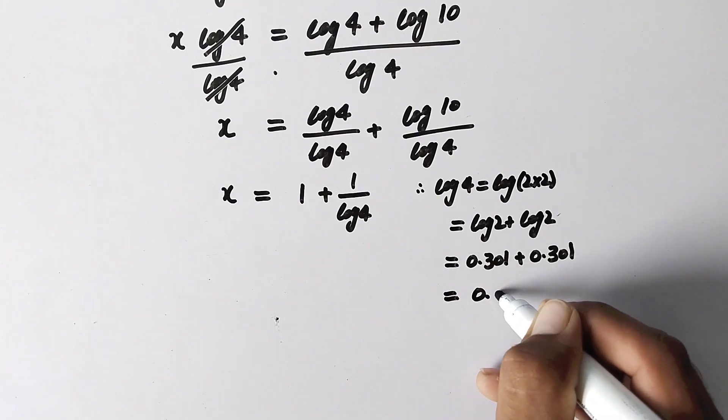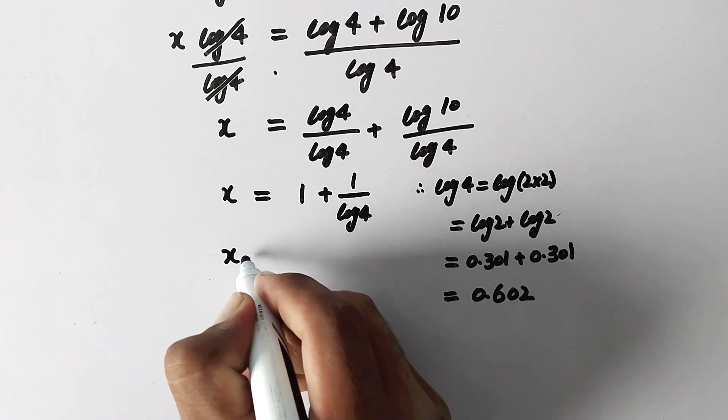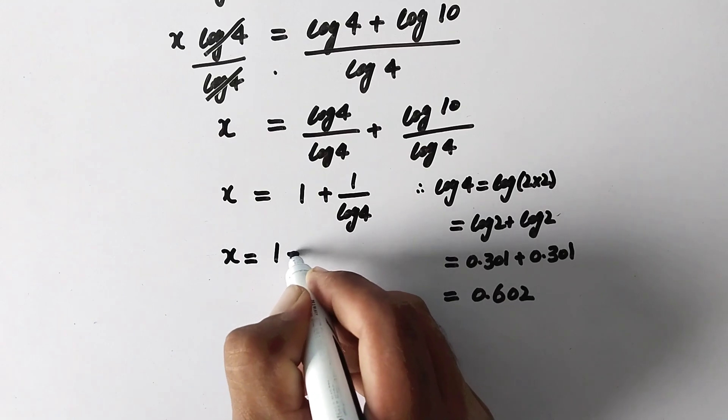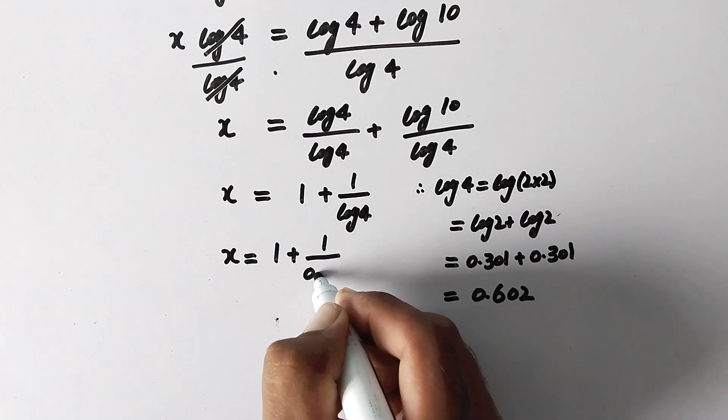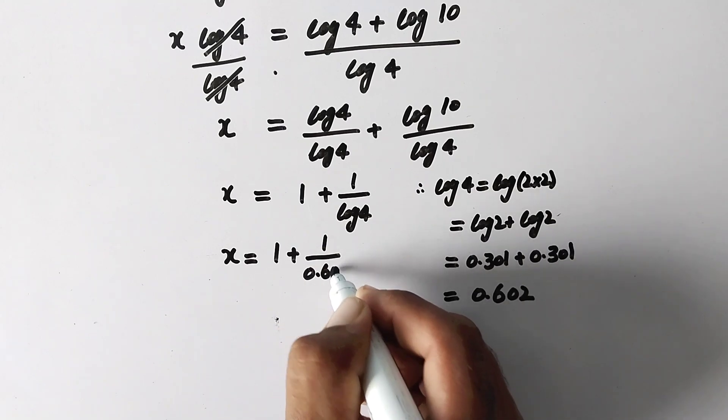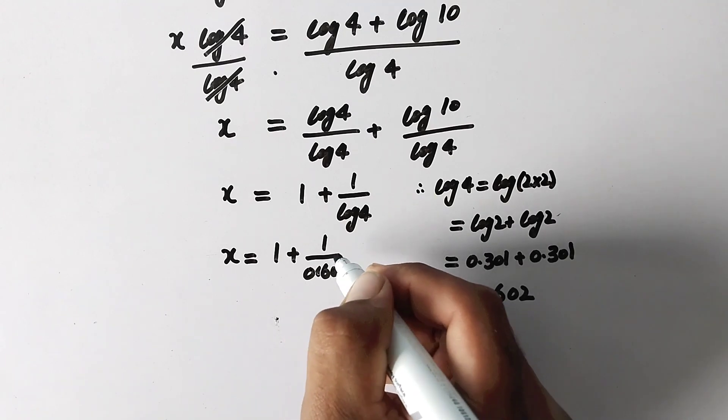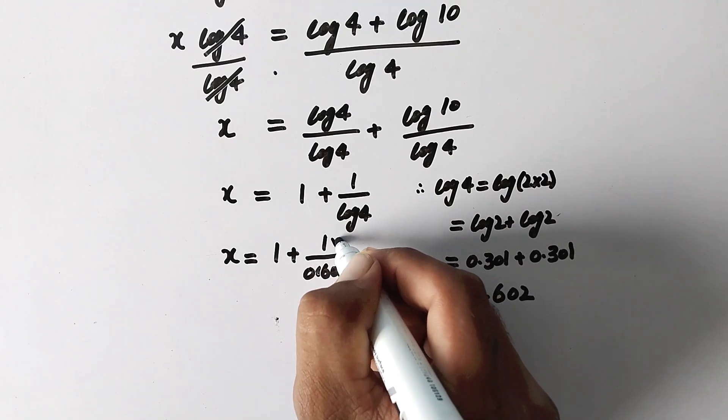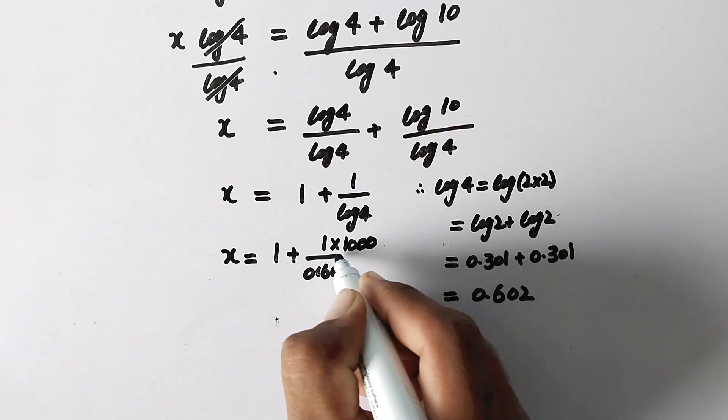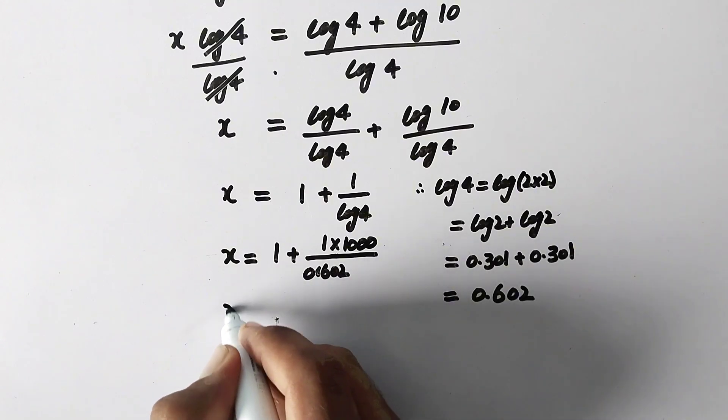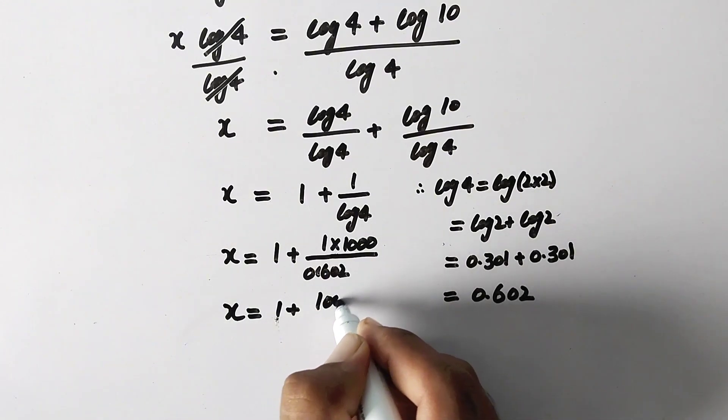So here we will write x is equal to 1 plus 1 over 0.602. And by eliminating this decimal point we can multiply the denominator with 1000, so here it will be x is equal to 1 plus 1000 over 602.